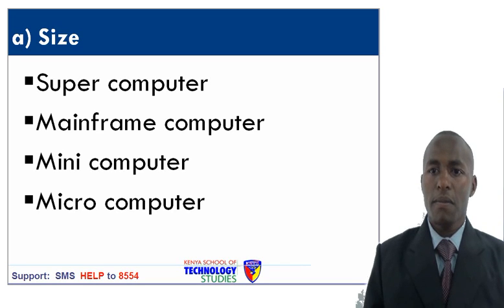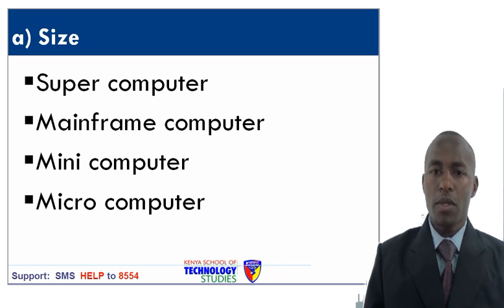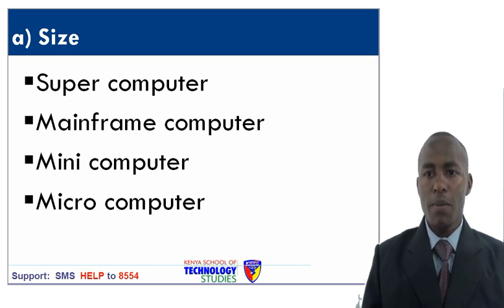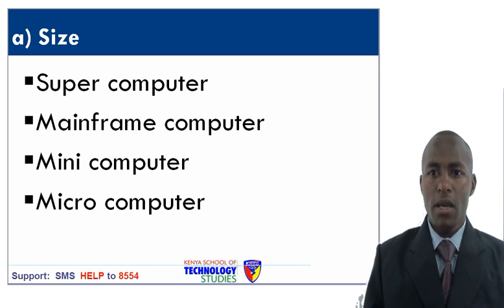The super computer is the fastest and biggest type of computer, and it is also very expensive. The mainframe computer is also big, but not as big as the super computer. It is fast and has high storage capacity. The mini computer is big, but not as big as the super computer and mainframe computer. It is also capable of handling multiprogramming or multitasking.